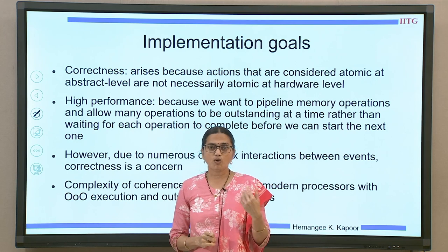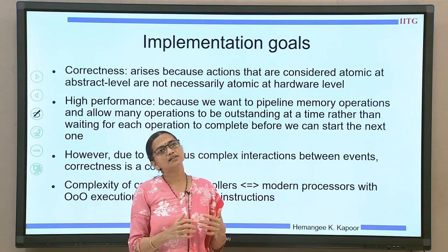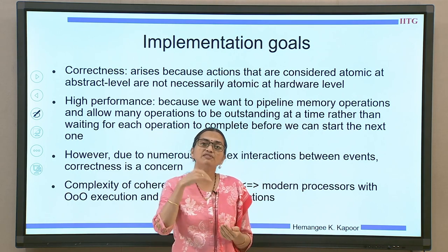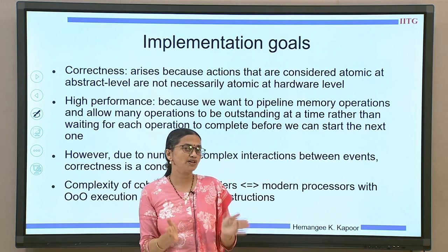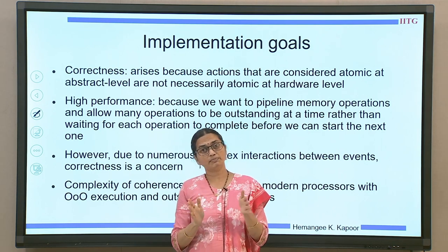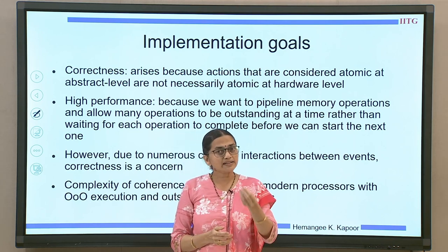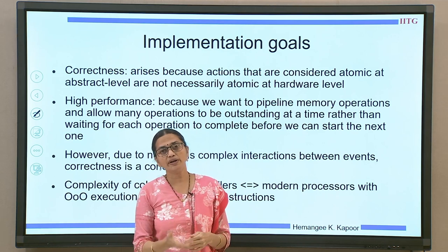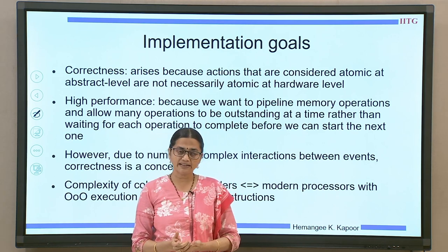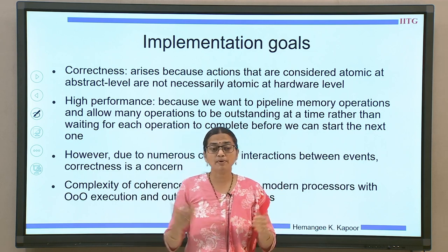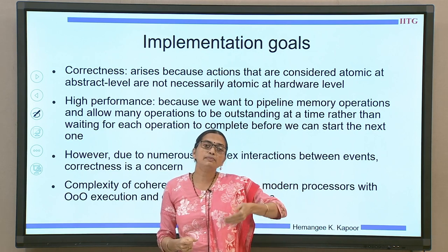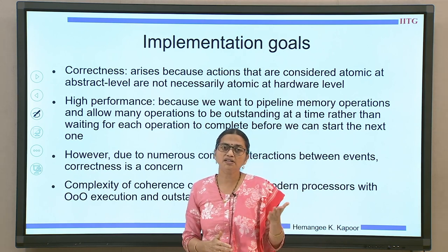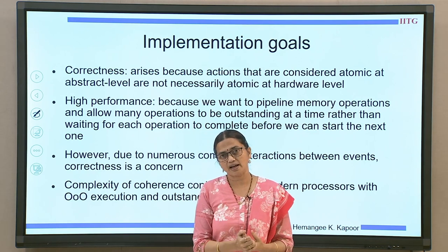We want the system to be high performing, but when we discussed cache coherent systems, we said let one transaction happen at a time — we sent an update and we assume the memory will first write that data and then we can proceed with the next read or write action. But if the system is implemented like this, it will be very slow because memory takes more time, and if you are doing one operation at a time there will be lot of gaps and many processors will be stalled. High performance requirement also puts load on the correctness aspects of your system.